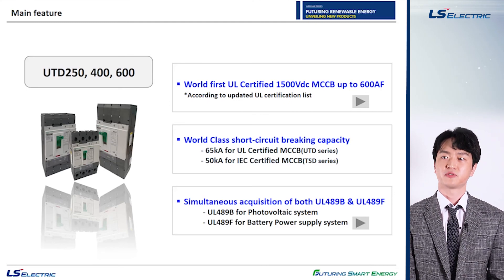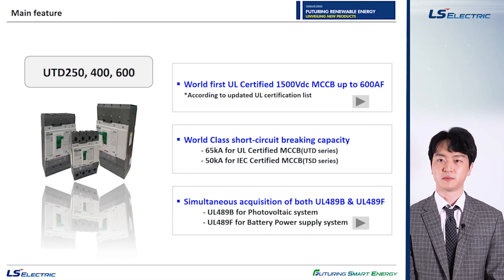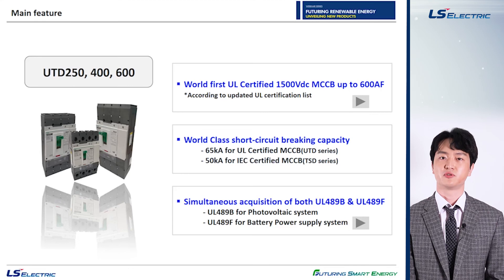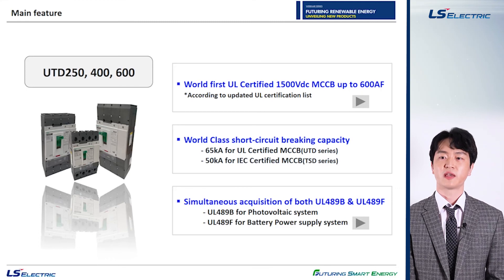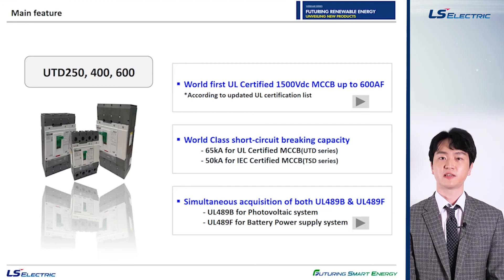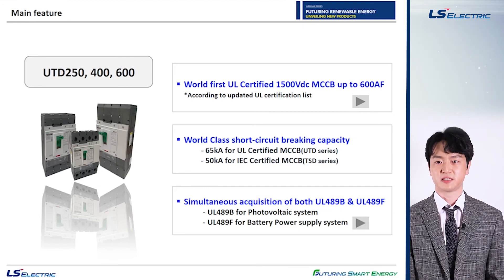In this slide I would like to focus on the main features of our 1500 DC volts UL MCCB. First of all, it is the world's first UL certified DC MCCB up to 600 ampere frame at 1500 DC volts, meeting the mandatory requirements of PV and ESS customers in the United States, the second biggest market globally. We guarantee a high short circuit breaking capacity of 65 kilo amps for UL MCCB and 50 kilo amps for IEC MCCB, both of which are world class at this moment.